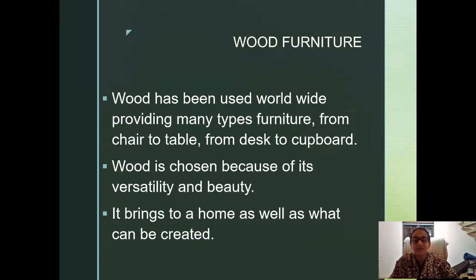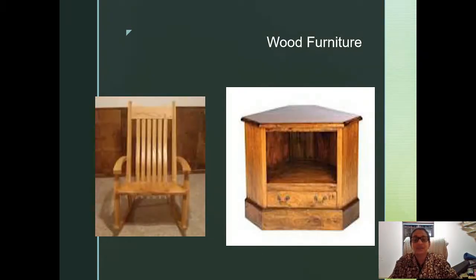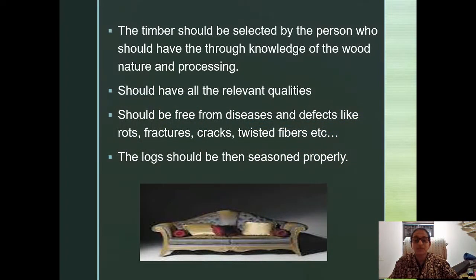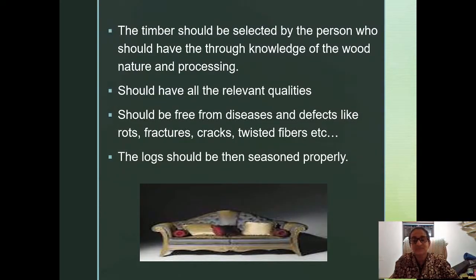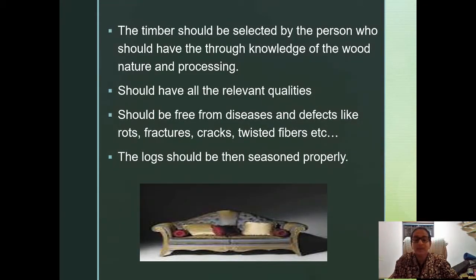Different kinds of wood like oak, teak, mahogany, and rosewood can each be identified by their color and grains. You can see a number of wood pieces. When you select timber, you have to thoroughly know the nature, processing, life, and the qualities required for making the furniture pieces.